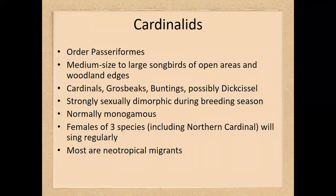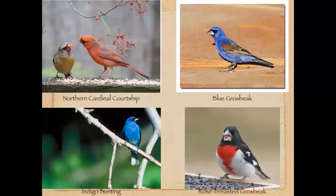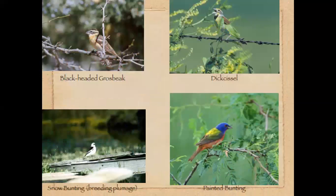The cardinal grouping contains medium to large songbirds — it includes the cardinals, grosbeaks, buntings, and the dickcissel. There are three species where the females also sing. Most of these are monogamous with sexual dimorphism, and many are neotropical migrants. You may be familiar with some species, or at least the northern cardinal.